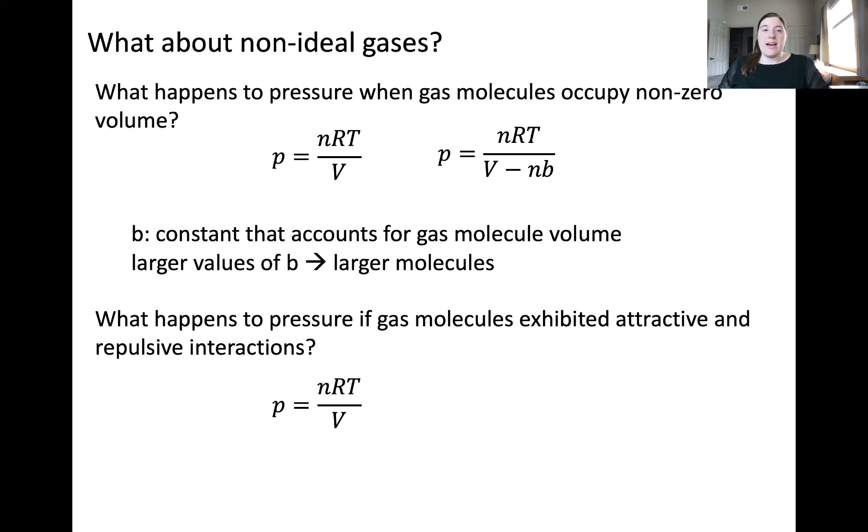The impact of gas molecules attracting one another is that the pressure of the gas sample would decrease when compared to the pressure calculated using the ideal gas model. This is because the molecules are attracting each other and therefore colliding less frequently with the walls of their container.